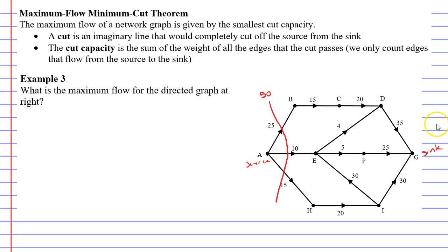Let's make another random cut. I think I'll make one near the end, close to the sink. And this green cut definitely cuts off the source from the sink. And when we add up our weighted edges, 35 plus 25 is 60, plus 30 is 90.